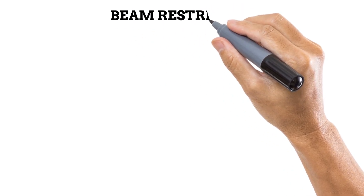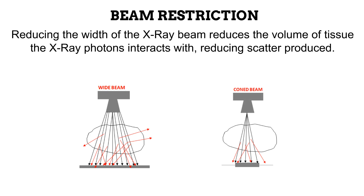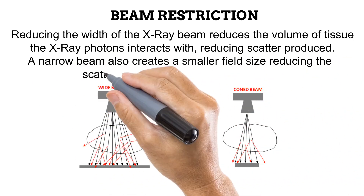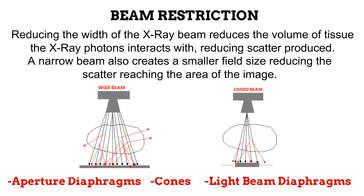The final approach to reducing the amount of scatter produced that we would be looking at is the use of beam restriction. By reducing the width of the X-ray beam, the volume of tissue that the X-ray photons interact with is reduced. When the photons interact with a smaller volume of tissue, less scatter is produced. Also, when the width of the beam is reduced, a smaller field size is created and a smaller image receptor is used. Some of the photons produced will bypass this image receptor because of its smaller size. The three common devices used in reducing the width of the beam include aperture diaphragms, cones, and light beam diaphragms.